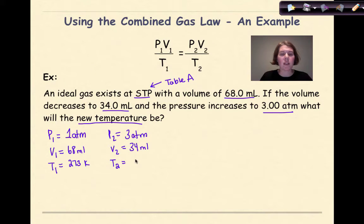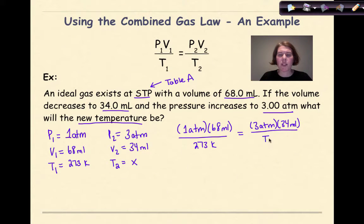Now I'm going to take the information that is given to me and plug it into this formula. So I'm going to have 1 atmosphere times a volume of 68 milliliters. I'm not going to worry about converting this into liters. As long as my units for volume stay constant, I'm not going to worry about it. So 1 atmosphere, 68 milliliters, over 273 Kelvin. And then on the other side, I'm going to have 3 atmospheres, 34 milliliters, and I'm going to be solving for T2, which is my x.